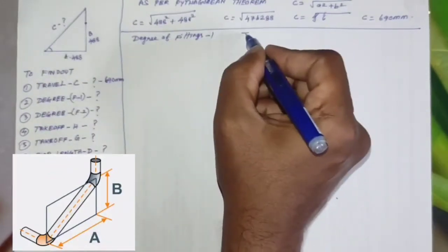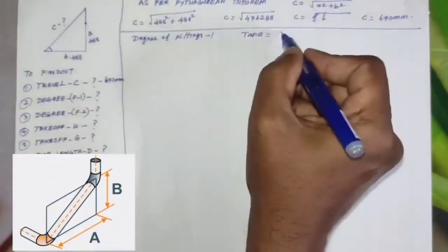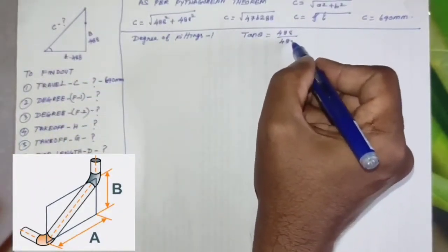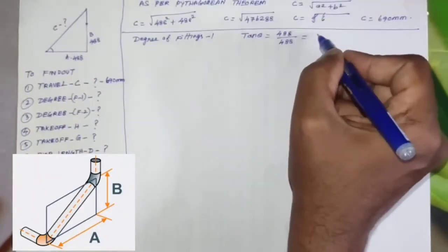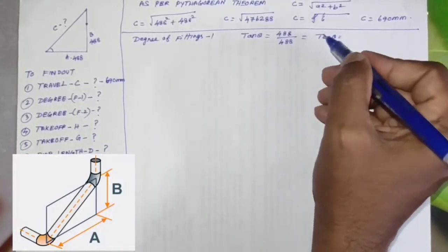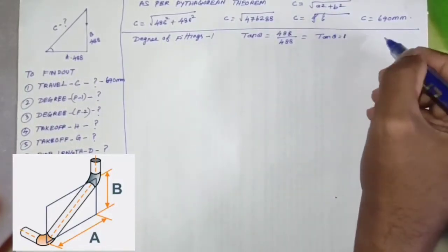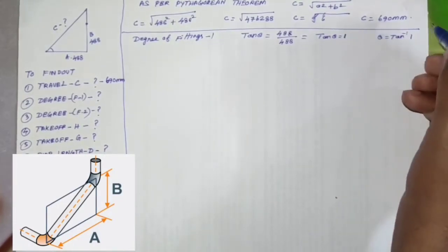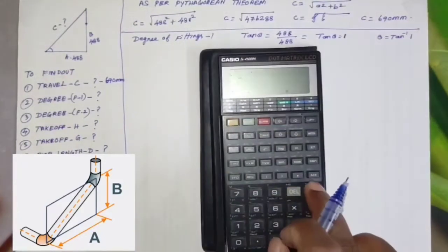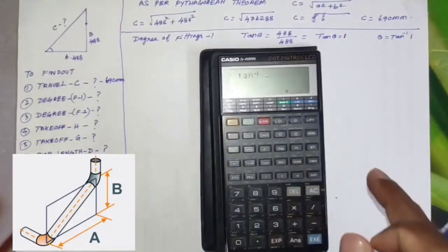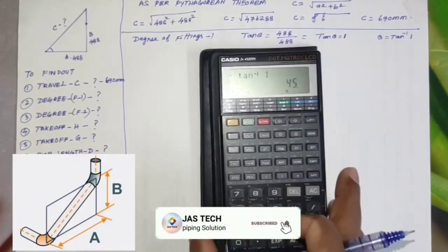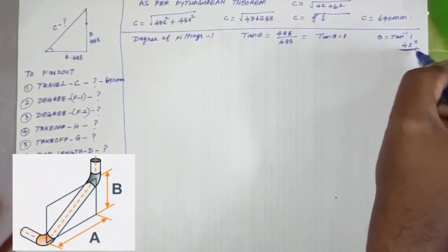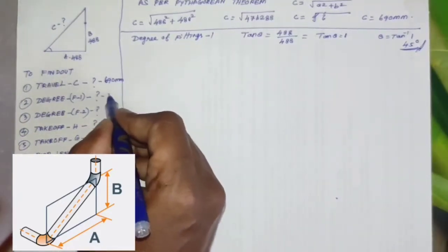So degree formula: tan theta equals opposite side by adjacent side. Opposite side 488 mm, adjacent side 488 mm. So tan theta equals 1, theta equals tan inverse 1. So the degree of fittings one, by using calculator, tan inverse 1 equals 45. So the degree is 45.